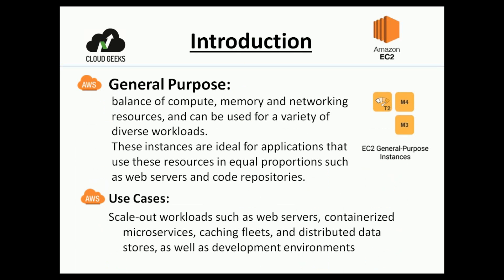General purpose provides a balance of compute, memory, and networking resources and can be used for a variety of diverse workloads. These instances are ideal for applications that use these resources in equal proportions, such as web servers and code repositories. The use cases include scale-out workloads such as web servers, content management, microservices, caching fleets, distributed data stores, and development environments.